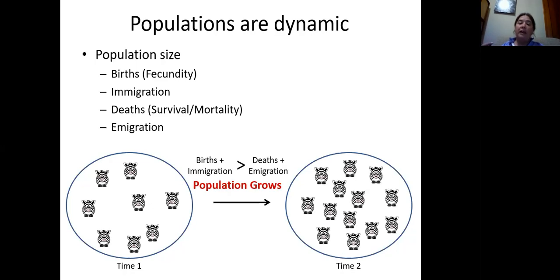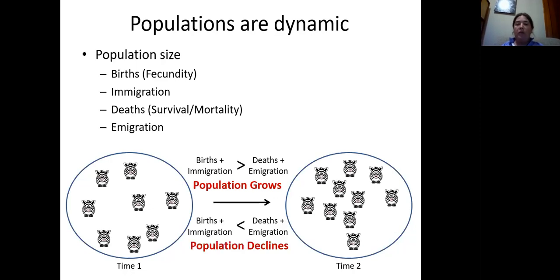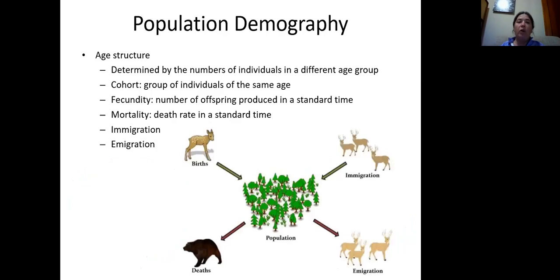Whenever the births and immigrations combined are more than the deaths and emigrations, the population is going to grow. However, if the births and immigrations are less than the deaths and emigrations, then you expect the population to shrink. Population ecology is very often involved in understanding these different components.